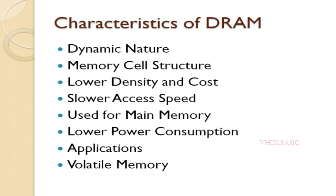Slower access speed: DRAM has slower access times compared to SRAM. This is due to the need for periodic refresh cycles and the additional time required to read from and write to the storage capacitors. Used for main memory: DRAM is commonly used as main memory in computers and other devices. It provides large storage capacity compared to SRAM at a more affordable cost. Lower power consumption: DRAM typically consumes less power than SRAM.